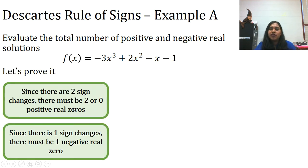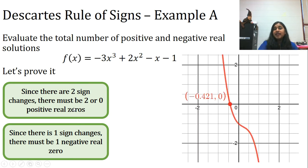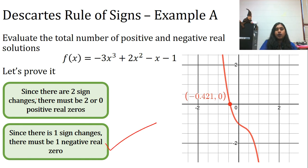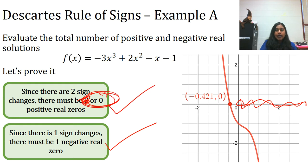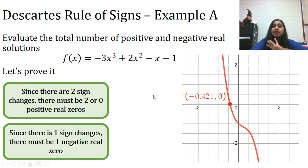Let's prove that with a graph. Look at that — negative 0.421. There is my negative real zero. What about my positive? Are there any solutions over there? No. So not two — but I did account for zero. And that's all Descartes' Rule of Signs is saying. We will practice this on Friday.